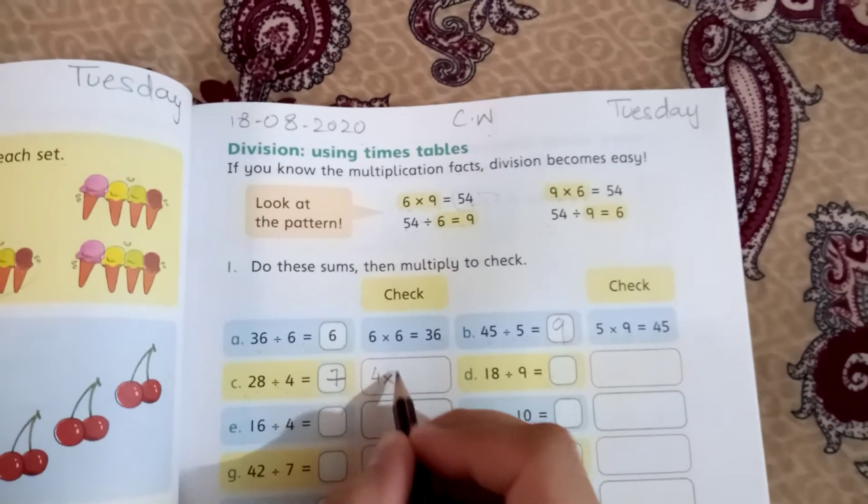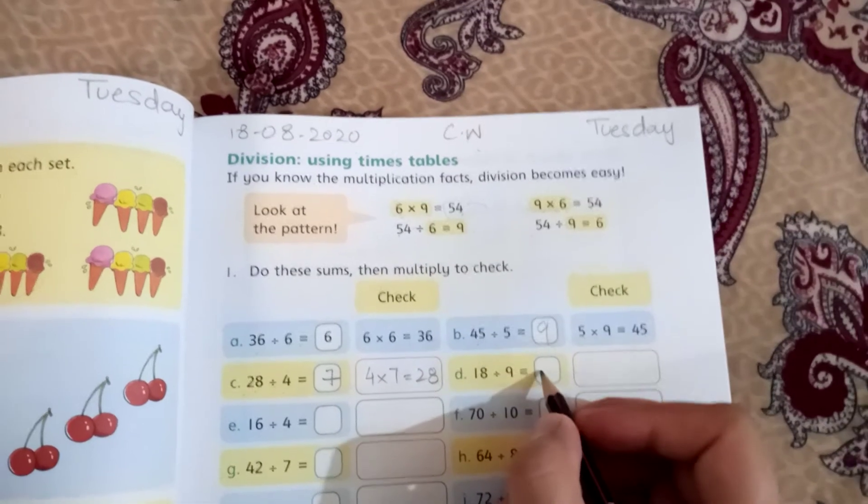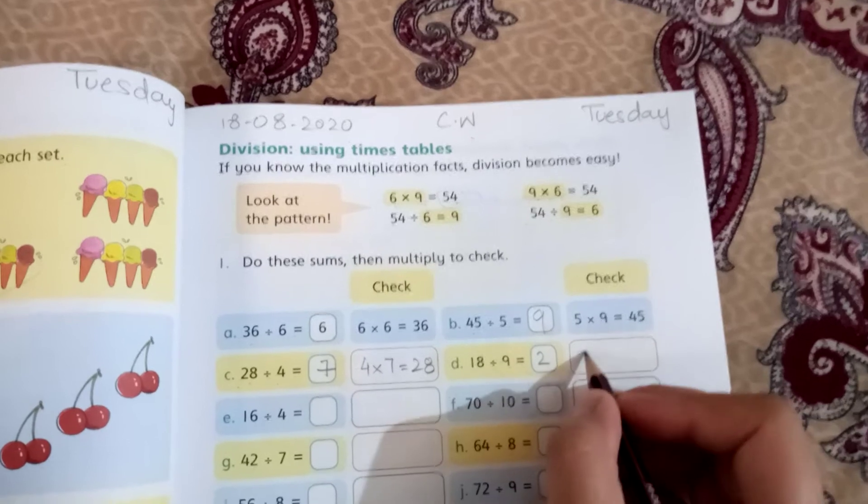18 divided by 9: 9 twos are 18. Multiply to get 18.